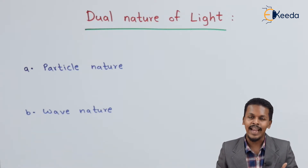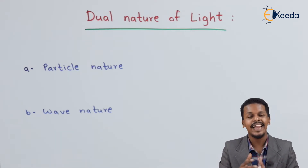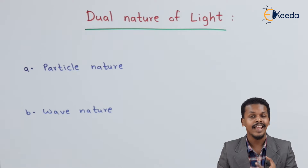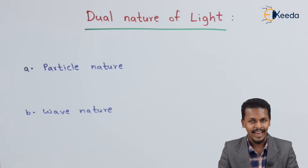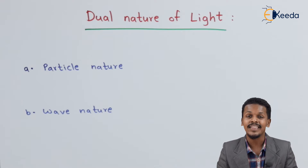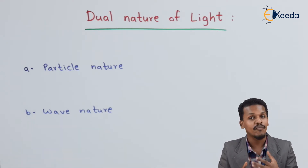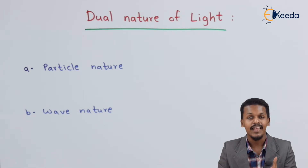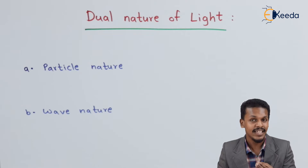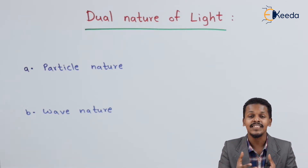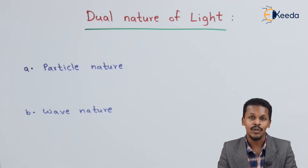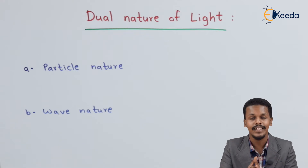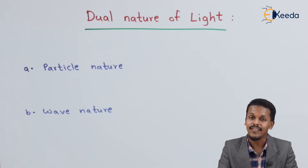Prominent scientists like Newton and Einstein have considered light as a particle. According to Newton's corpuscular theory of light, light is considered as a particle which has a particular energy. Einstein also said that light is made up of photons, and each photon has a particular energy — he named it as a quantum. So therefore, there are photons that consist of a specific amount of energy, indicating that light behaves like a particle.